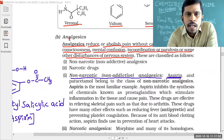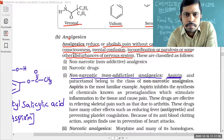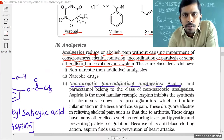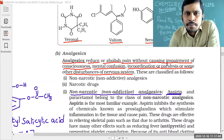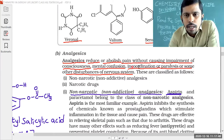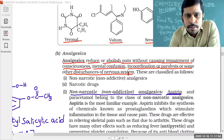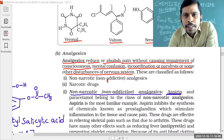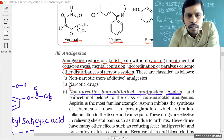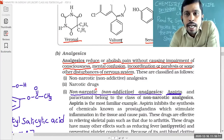The topic is analgesics — drugs used to reduce or abolish pain without causing impairment of consciousness, mental confusion, incoordination, or paralysis, or any other disturbance of the nervous system. They simply reduce the pain and are classified into two types: first, non-narcotic analgesics — known as non-addictive drugs; second, narcotic drugs — they are addictive drugs.